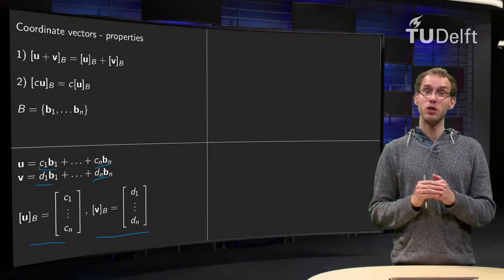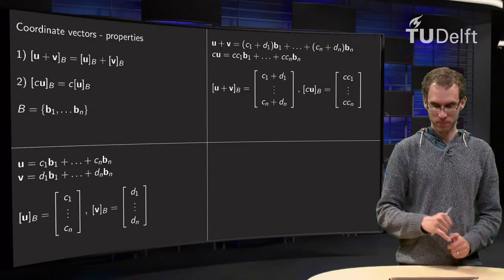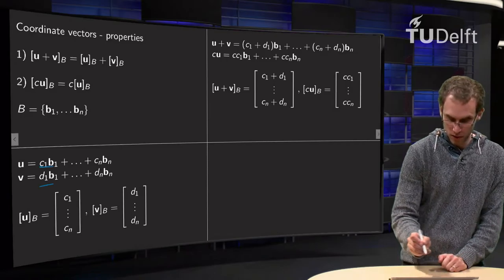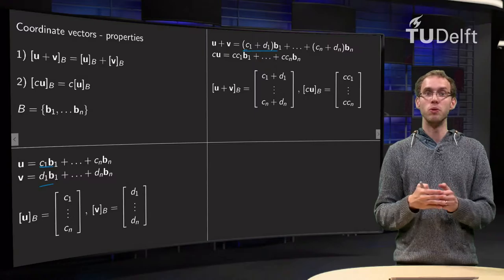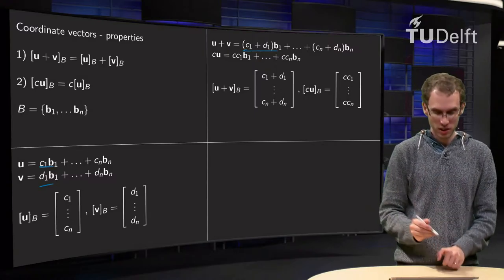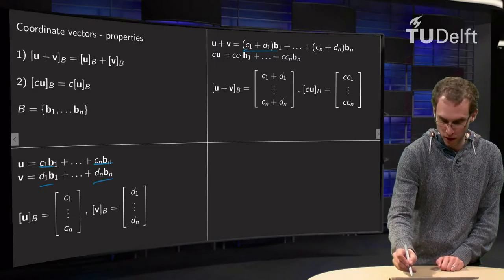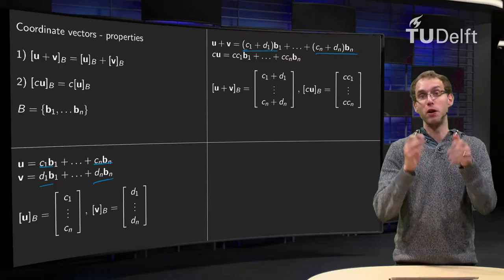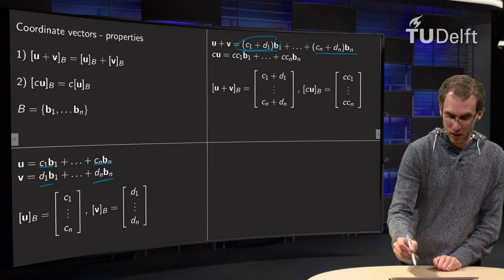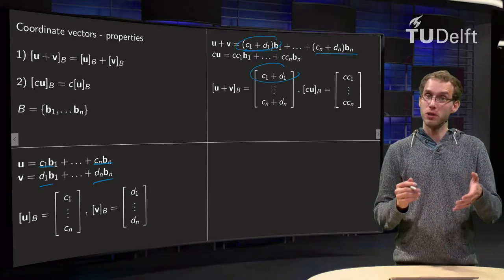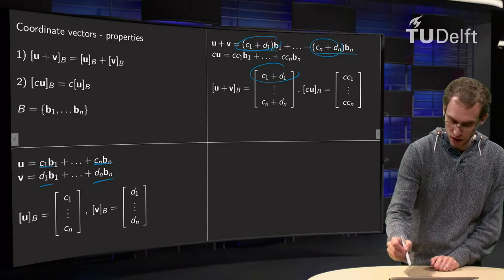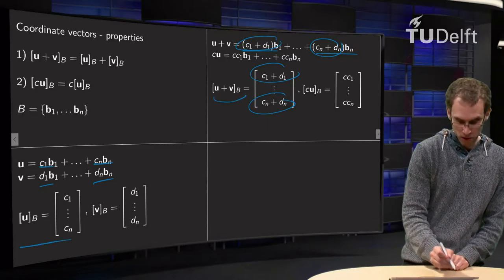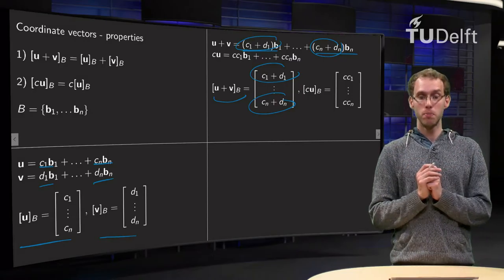What happens when we compute u plus v and then take the coordinate vector? We add u plus v, giving (c1 + d1)·b1 plus (c2 + d2)·b2 plus ... plus (cn + dn)·bn. The coordinate vector of the sum has weights c1 + d1, c2 + d2, ..., cn + dn. We see that the coordinate vector of [u + v] in basis b is exactly the sum of [u]_b and [v]_b, so that property is verified.